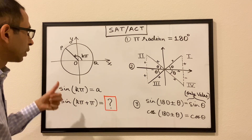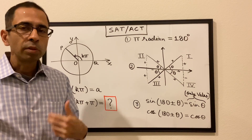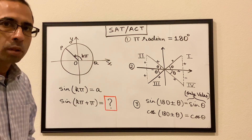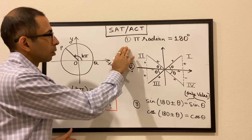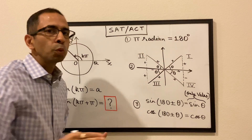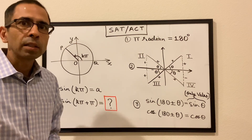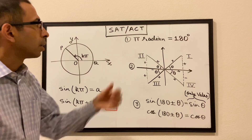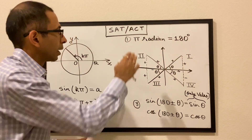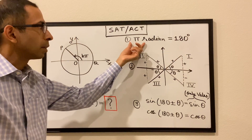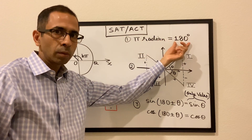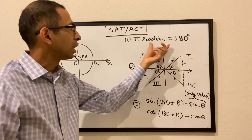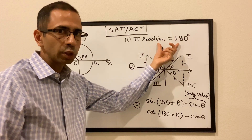Before we deal with this question, there are a couple of concepts we need to talk about — mainly three things. The first is that π and degrees are the two units of angles. Like the way we have different units for length and time, for measuring angles we have radians and degrees, and this is the relation between the two: π radians is equal to 180 degrees. We need to be very clear on this conversion.